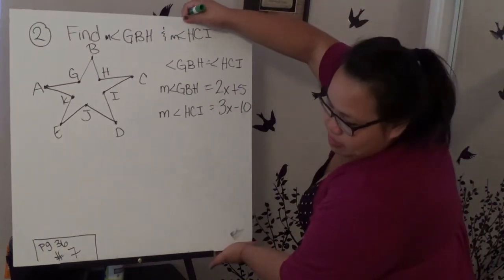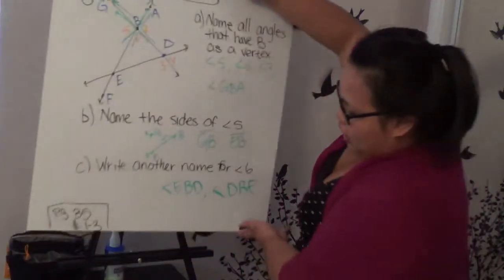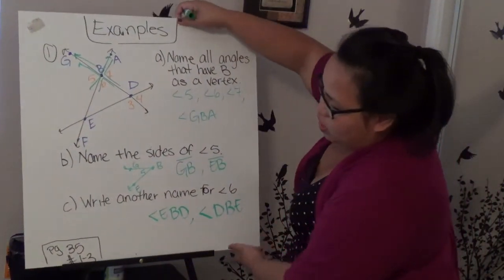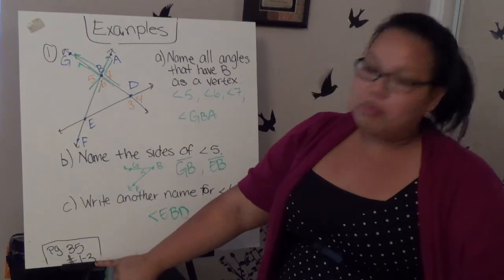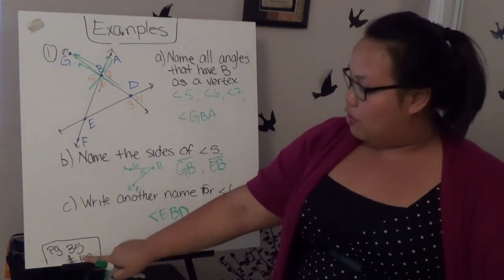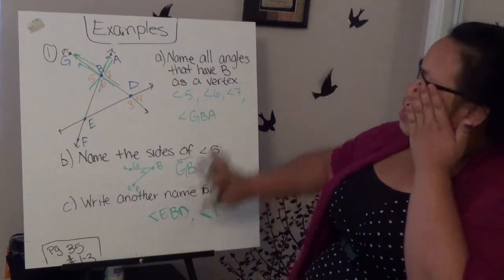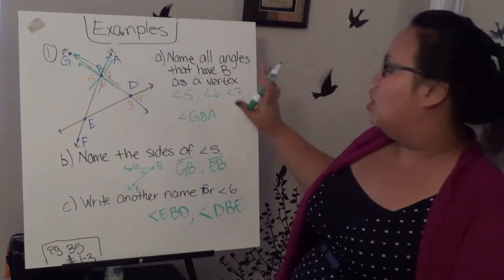Make sure for this one you remember that you're going to do page 35, number 1 through 3. That's the extra problem that you need to do after this.